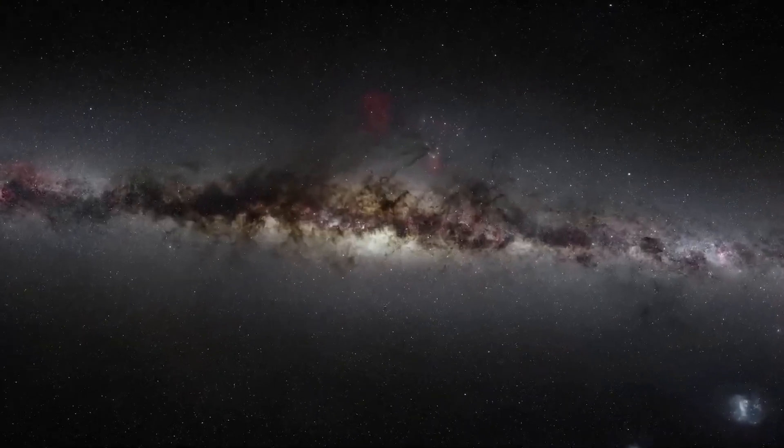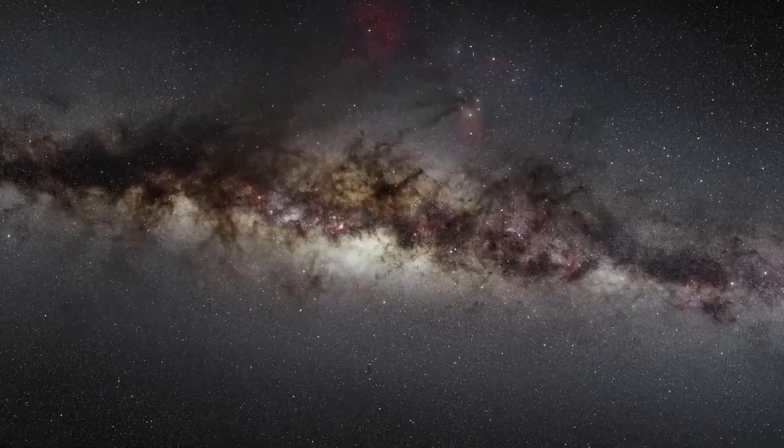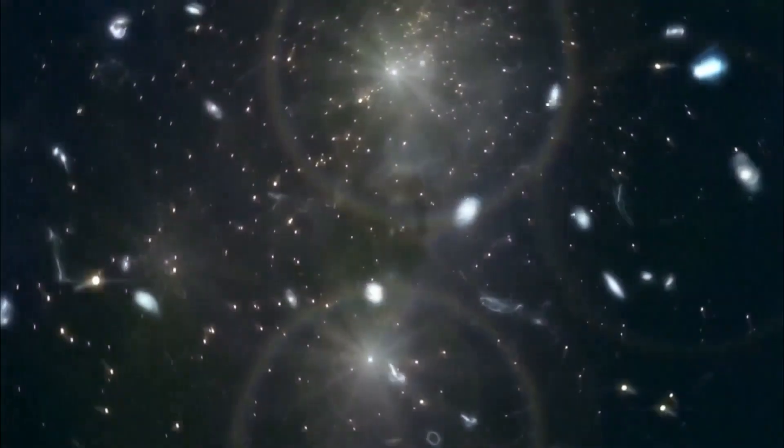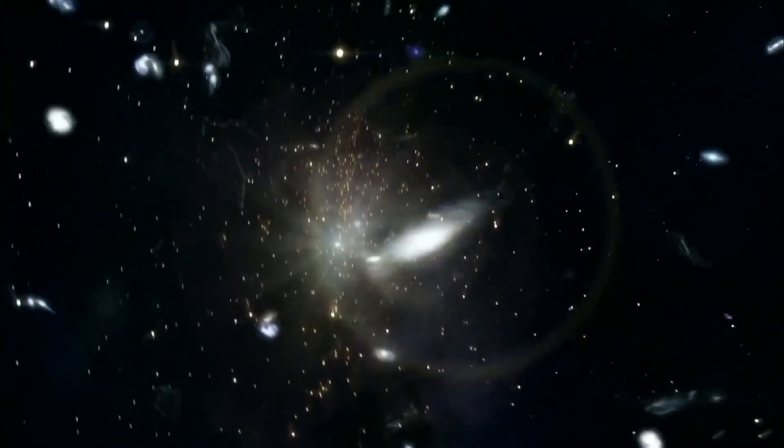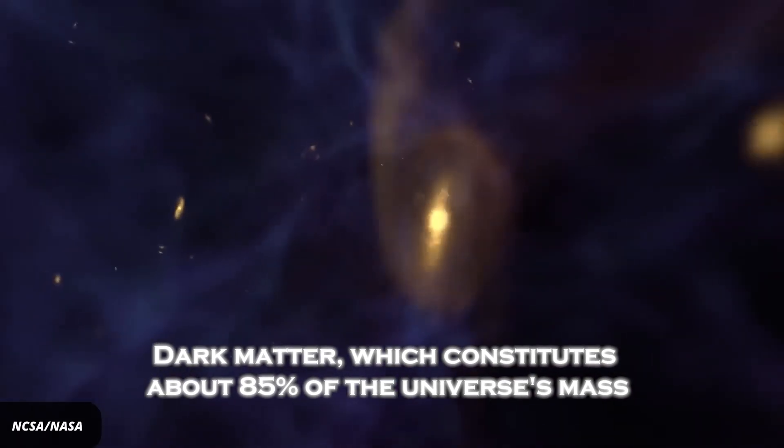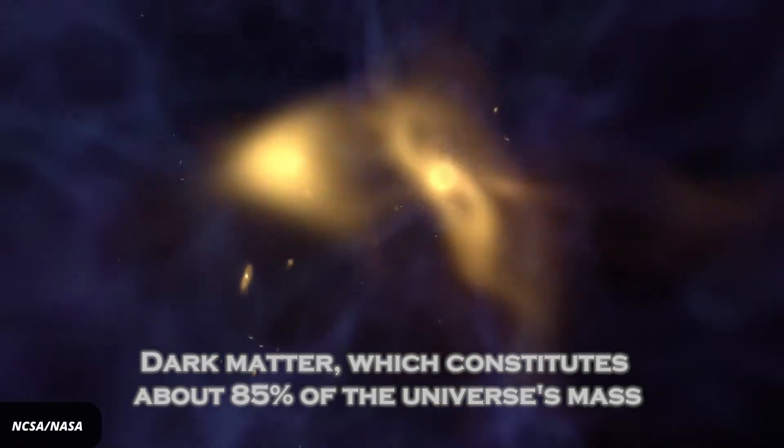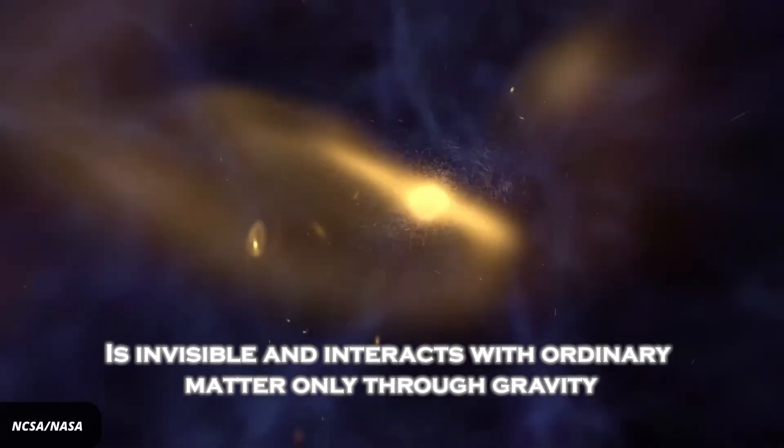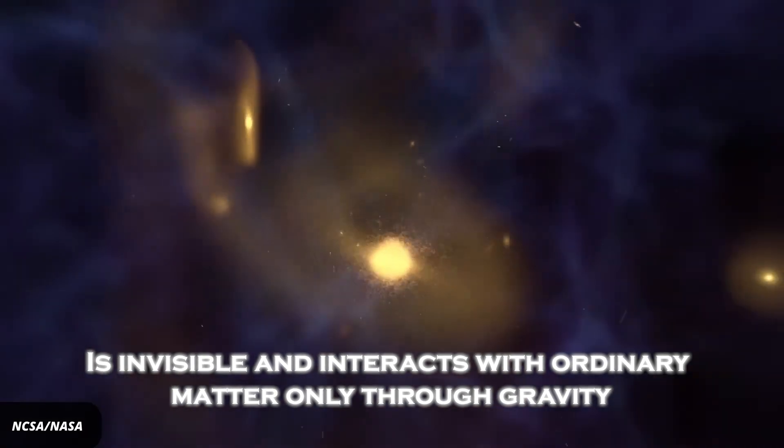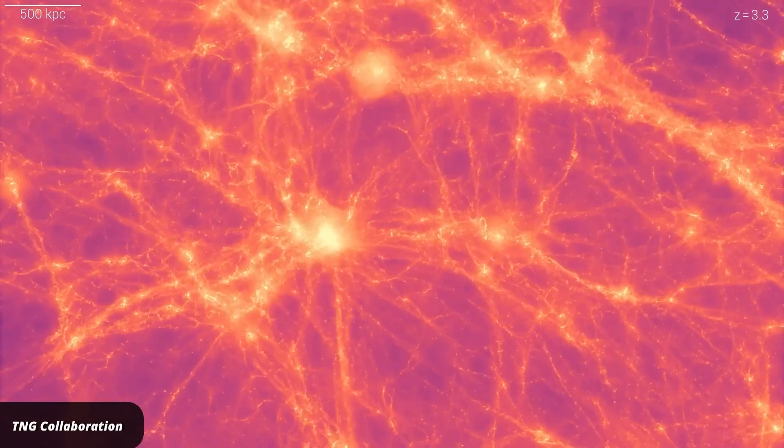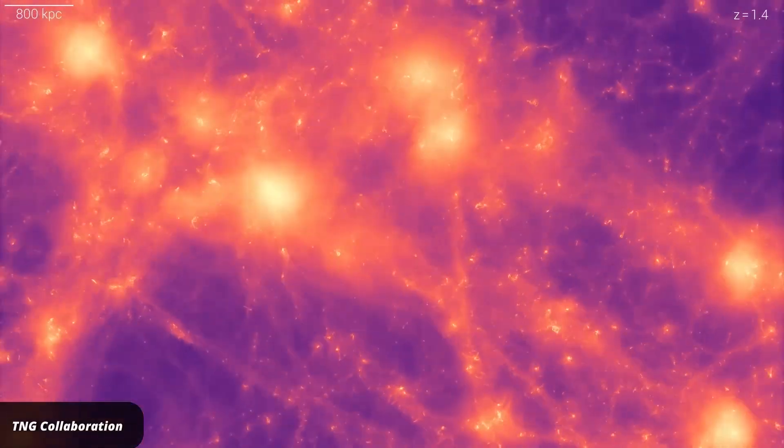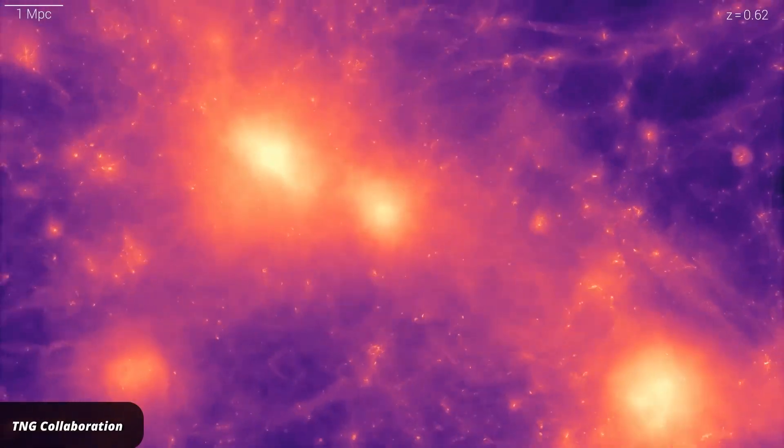One of the most intriguing aspects of this discovery is the potential connection between the structures in the image and the concept of dark matter halos. Dark matter, which constitutes about 85% of the universe's mass, is invisible and interacts with ordinary matter only through gravity. It is thought to form halos around galaxies, holding them together and influencing their motion.